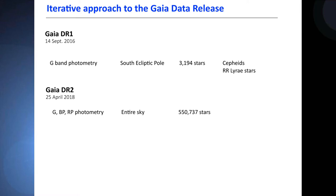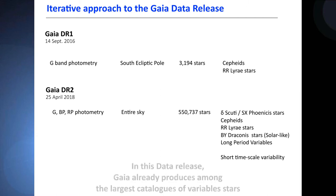We also expand the number of objects we classify: Delta Scuti SX Phoenicis stars, Cepheids, RR Lyrae, RV Tauri stars, long period variables, and we explored short time scale variability. In this data release, Gaia already produces among the largest catalogues of variable stars published.